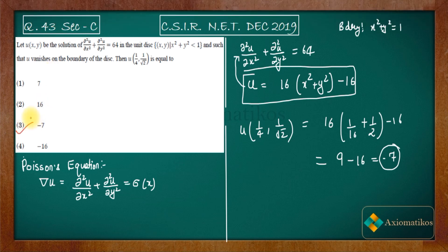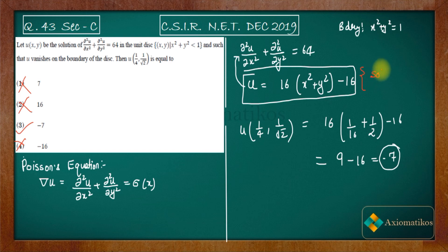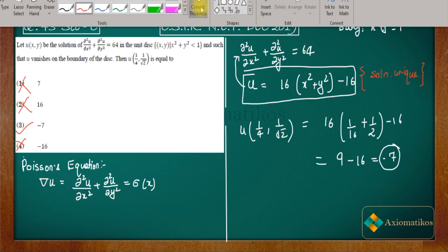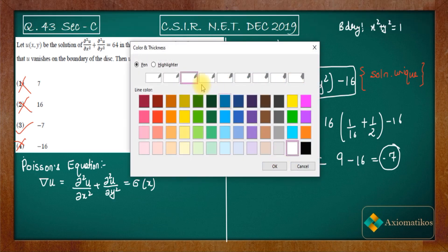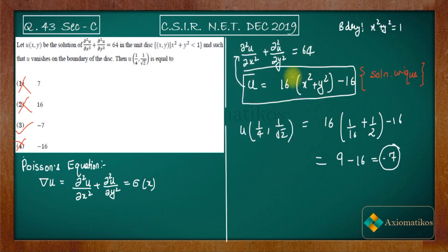The third option is correct and all remaining options are false. We found an example that satisfies both the partial differential equation and the boundary condition. Now, to be fully sure, we want to confirm that this solution is the unique solution for this problem. We can do this using a standard theorem.